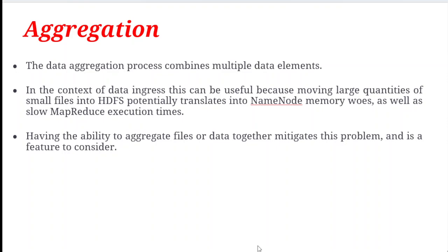The next key element is aggregation. Data aggregation combines multiple data elements. In the context of data ingress, aggregation means combining all multiple elements into a single element. We can move large quantities of small files into HDFS and translate them into the name node and MapReduce execution types. The ability to aggregate or compress files helps mitigate problems.